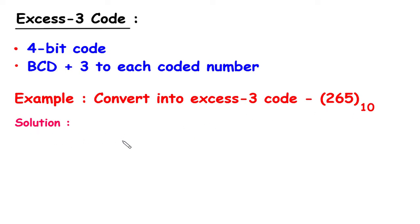Solution: 2, 6, 5. Now to convert this into its equivalent XS3 code, we will add 3 to each coded number.